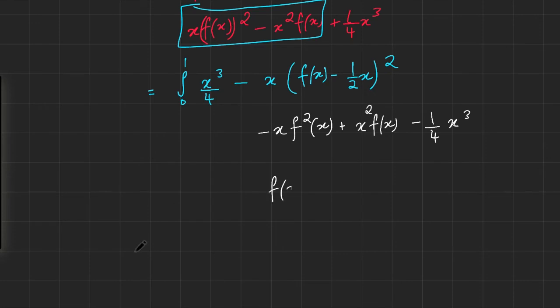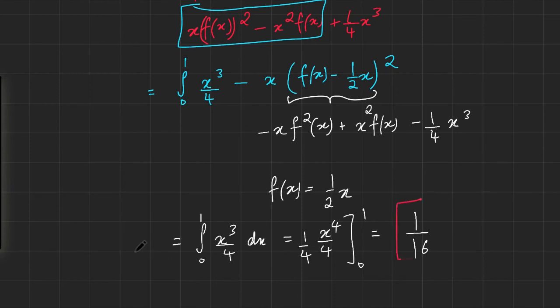So if f(x) equals ½x, the integral becomes the integral from 0 to 1 of x³/4, and that's the maximum value you can get because any other variance in f(x) would lead to a non-zero term being subtracted. The integral would simply be x⁴/4 from 0 to 1, which is 1/16.